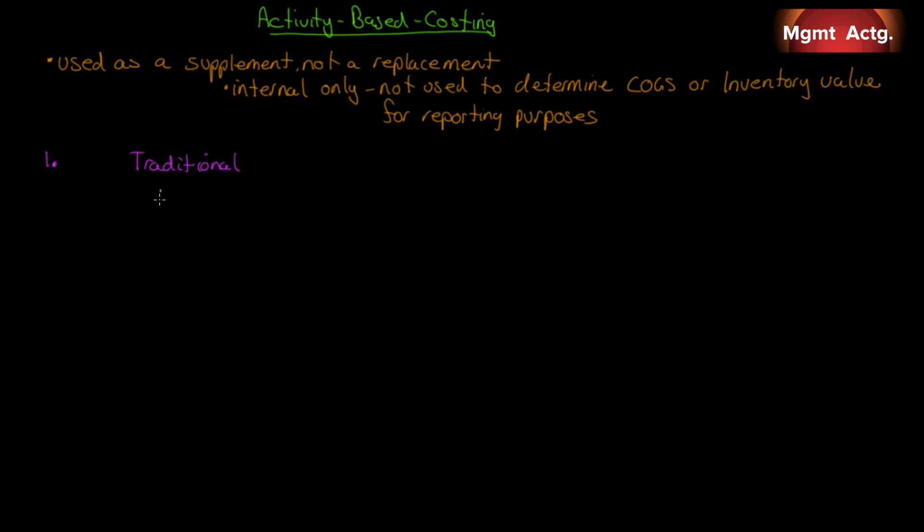So let's look at the difference between ABC and traditional costing, just so that you have some grasp of where we're going here. You'll recall that up to now, we've been pushing the idea of the manufacturing costs, direct material, direct labor, and manufacturing overhead.